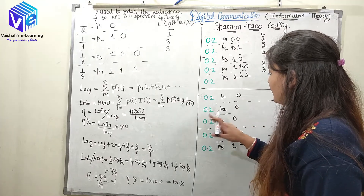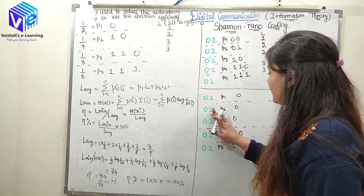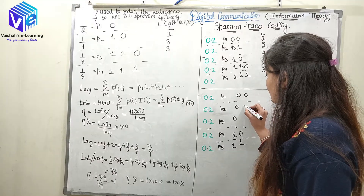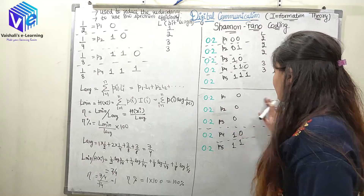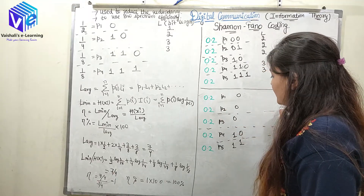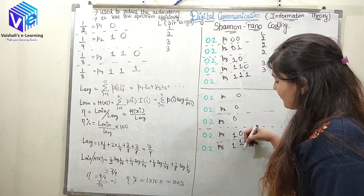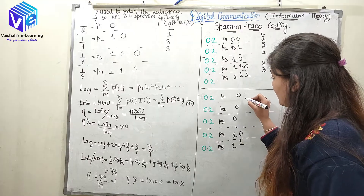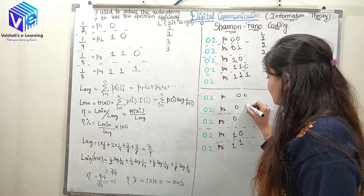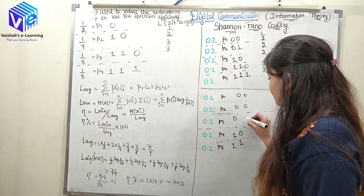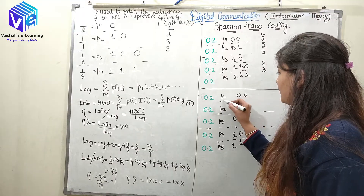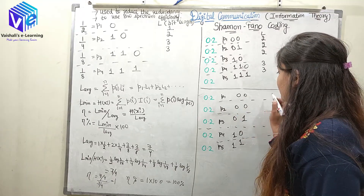The first student took the upper-side division, assigning 0, while the second student took the lower-side division. In the second student's scheme, two symbols are represented by 0 and one by 1, and further division continues with 0 and 1 assigned at the next level.